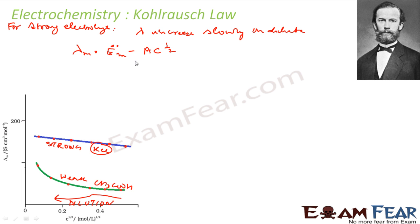The equation is λm = λm° - A·C^(1/2), where A is a constant and C is concentration. The value of A depends on the solvent. For example, NaCl and KCl will have the same value of A.